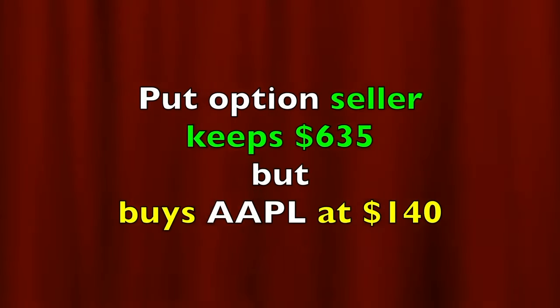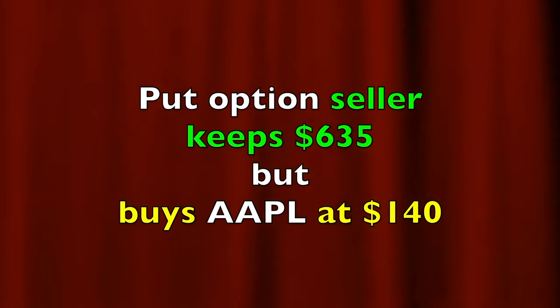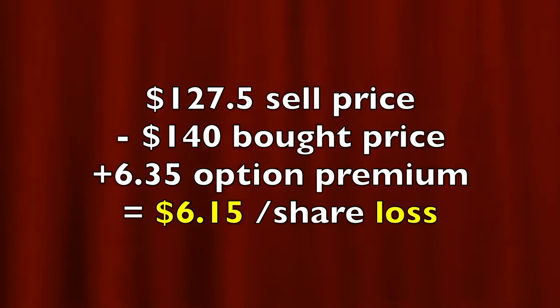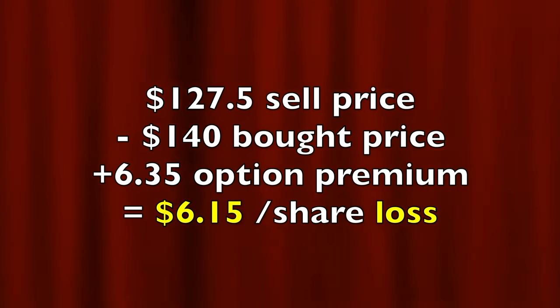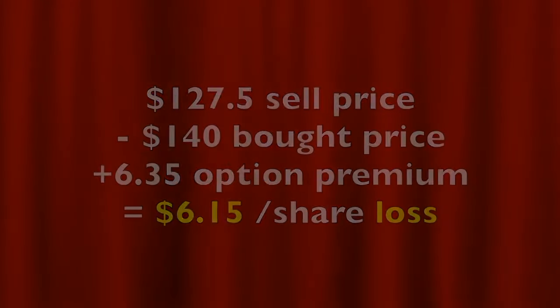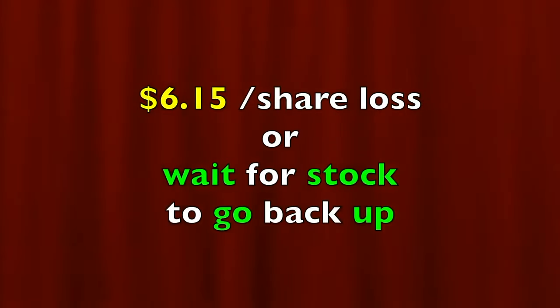Now remember that the person who sold that option agreed to buy the stock from you at $140 per share. So yes, they got to keep the $635 that you paid them for the put option, but now they own the stock at $140 per share and it's only selling for $127.50 per share. As a result, they get to sell it for that current price of $127.50 per share for a total loss of $6.15 per share, or just hold on to the stock for a while and hope that it goes back up in price, and then sell it at a later date. So that's what put options are — insurance for an investor to protect their investment.